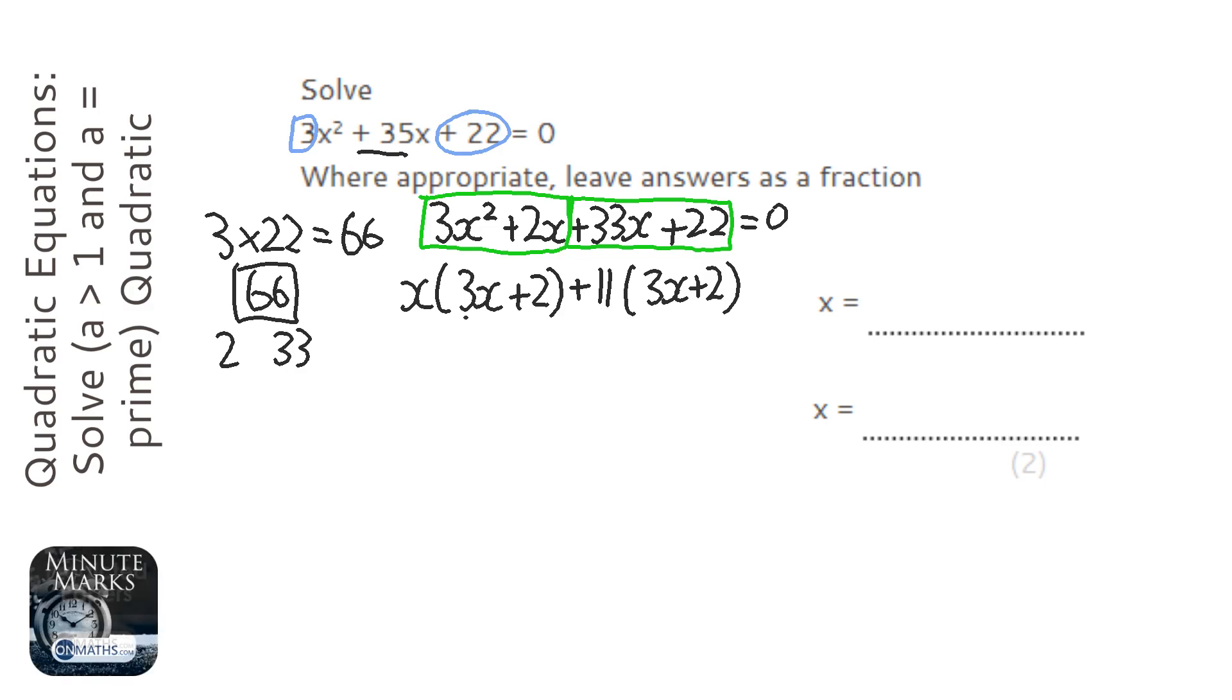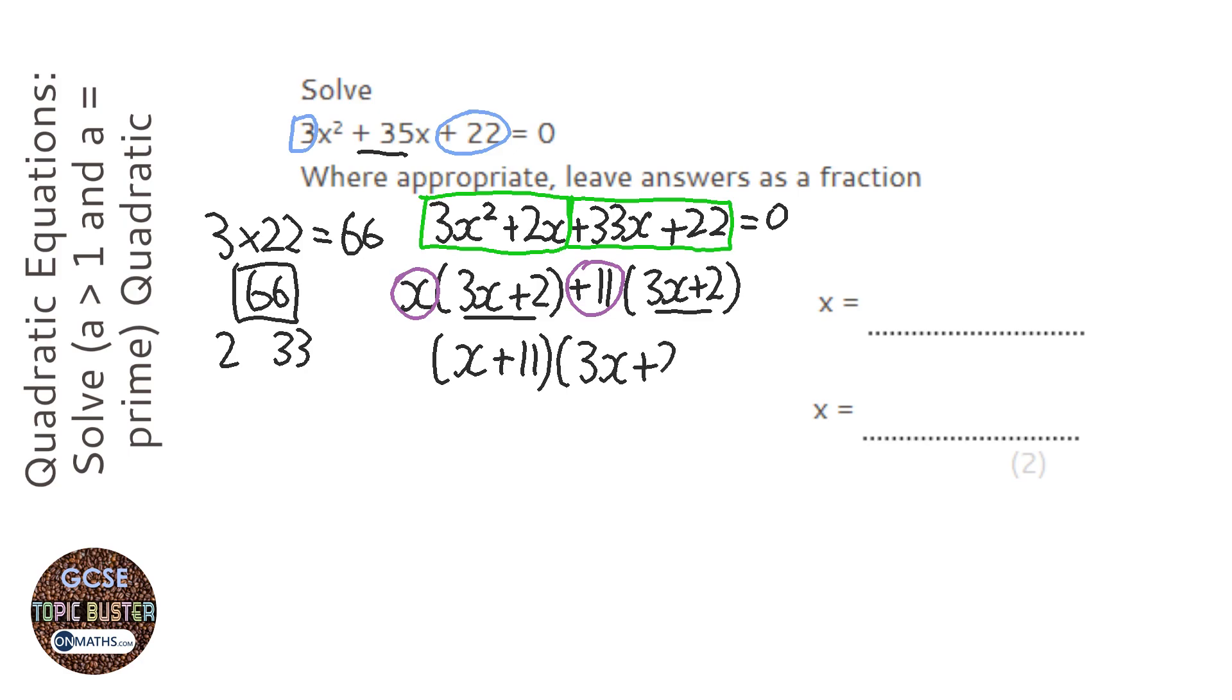If you've done this right, you'll get two identical brackets. The next step is we're going to grab all the numbers, or the letters and numbers that are before the brackets, so the x and the plus 11, and we're going to create a bracket of their own, like so. And then I'm going to just write the repeated brackets once. And I need to put my equal zeros in.